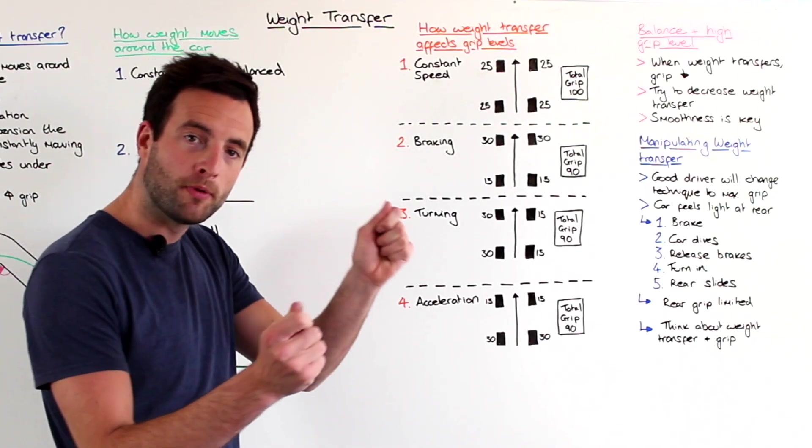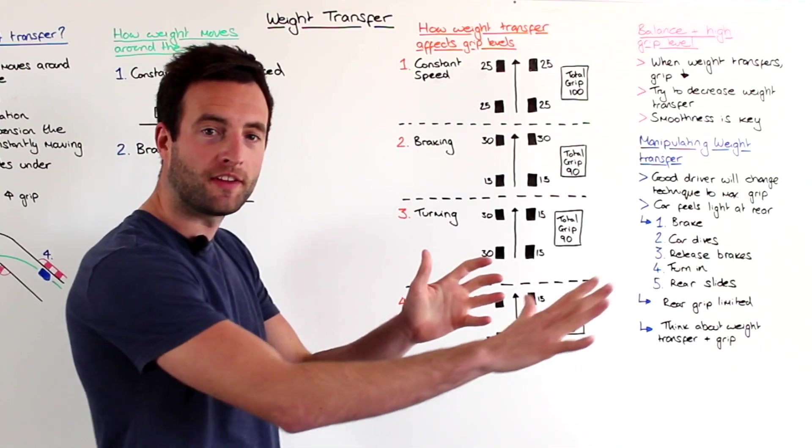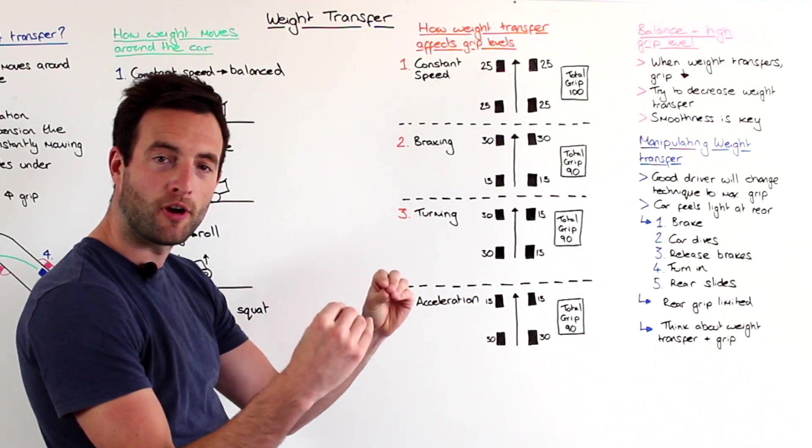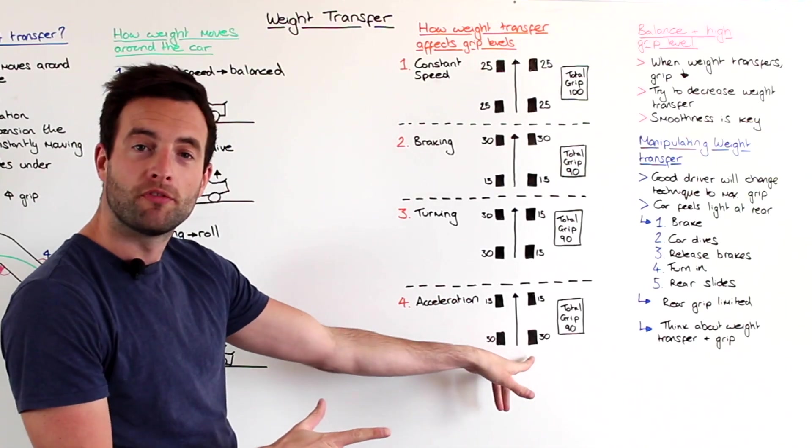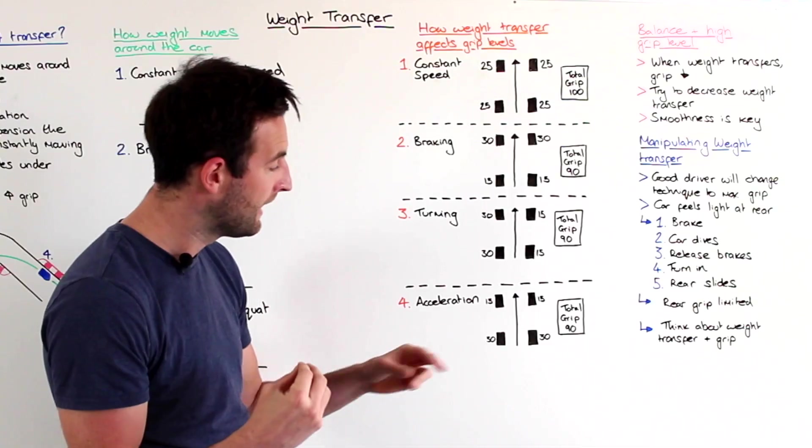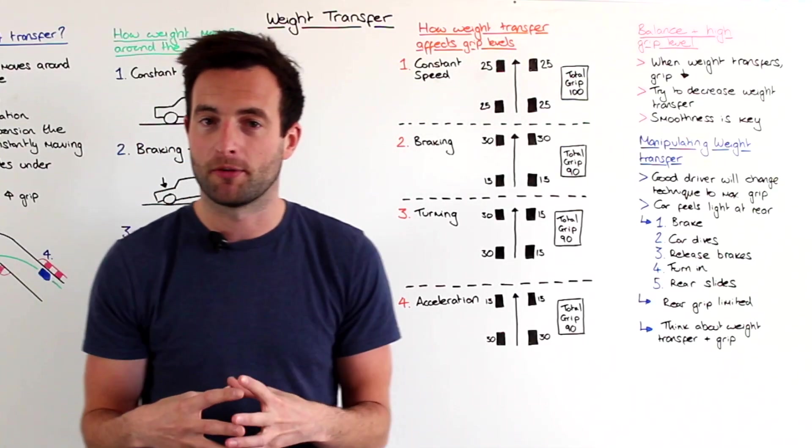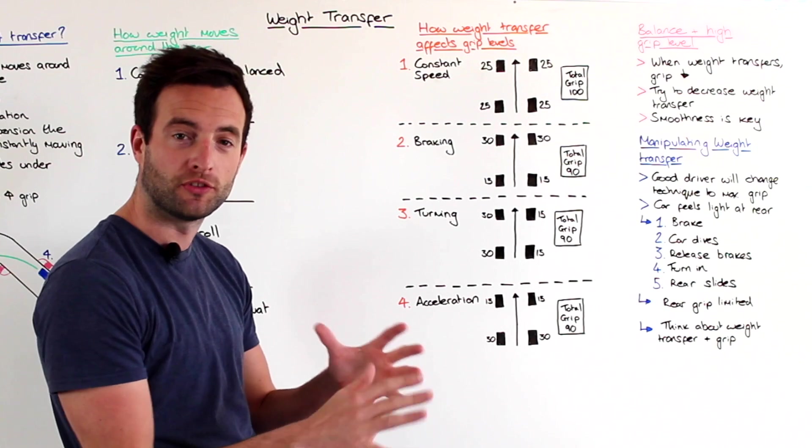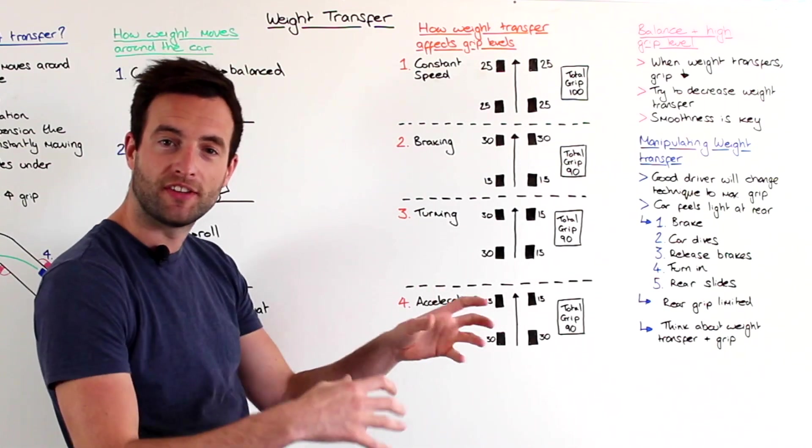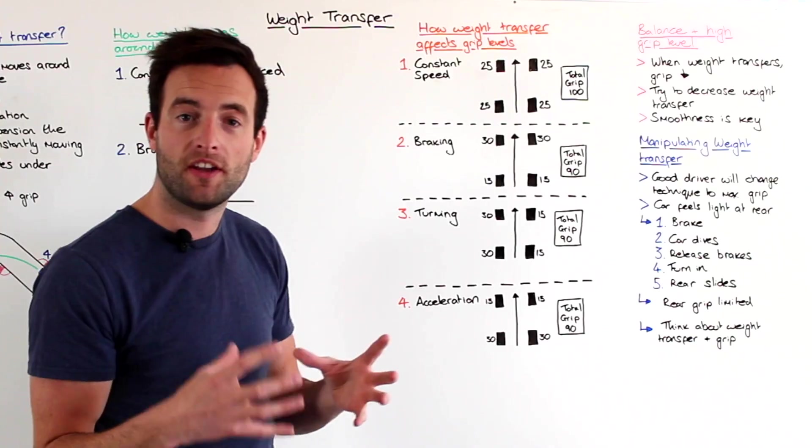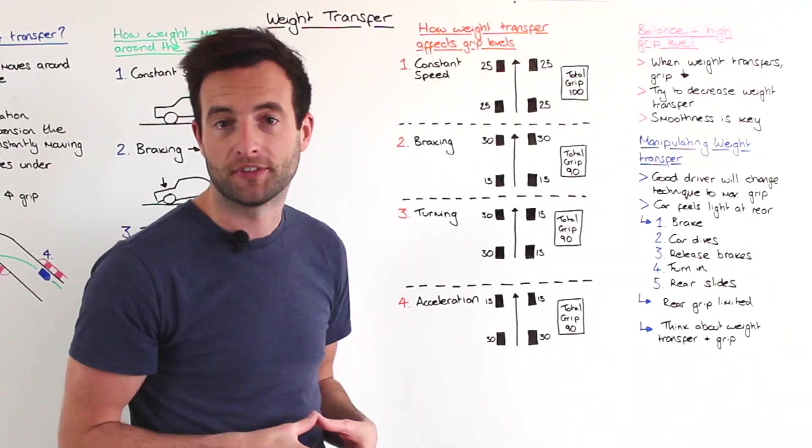Then we start to open up the steering wheel. We get on the gas pedal and the rear of the car sits down. The rear suspension compresses and the car squats. At this point, we've given the rear tires a grip level of 30 and the front tires only have a grip level of 15. So this is why sometimes when you get on the throttle, you can actually begin to understeer in the car because again, the grip balance is uneven and the car's unbalanced at this point.